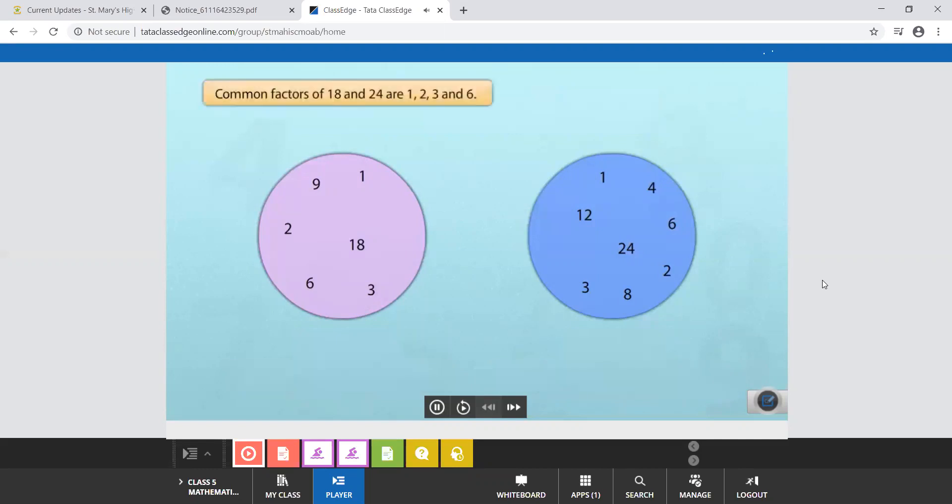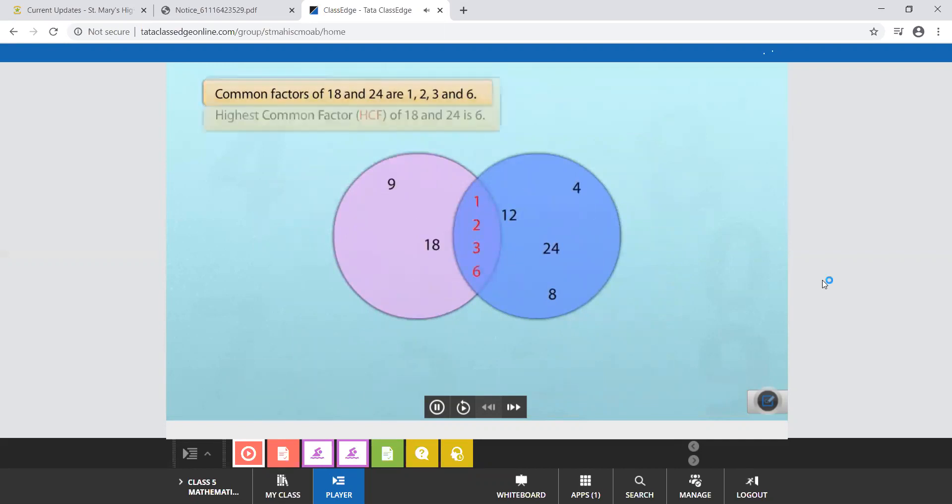Can you see any common factors in both? As you can see 1, 2, 3 and 6 are common factors for both. Of these the highest factor is 6. So 6 will be called the HCF or the highest common factor of 18 and 24.